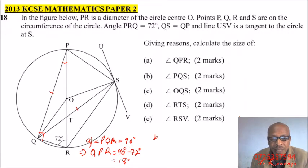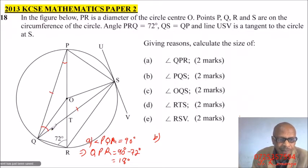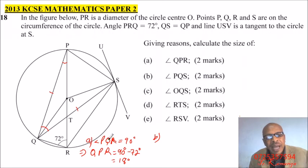Part B of the question, we are told, we get the size of PQS. So this angle here, this is the one that we are interested in. Now that angle, what we do is that we know PSQ is 72.